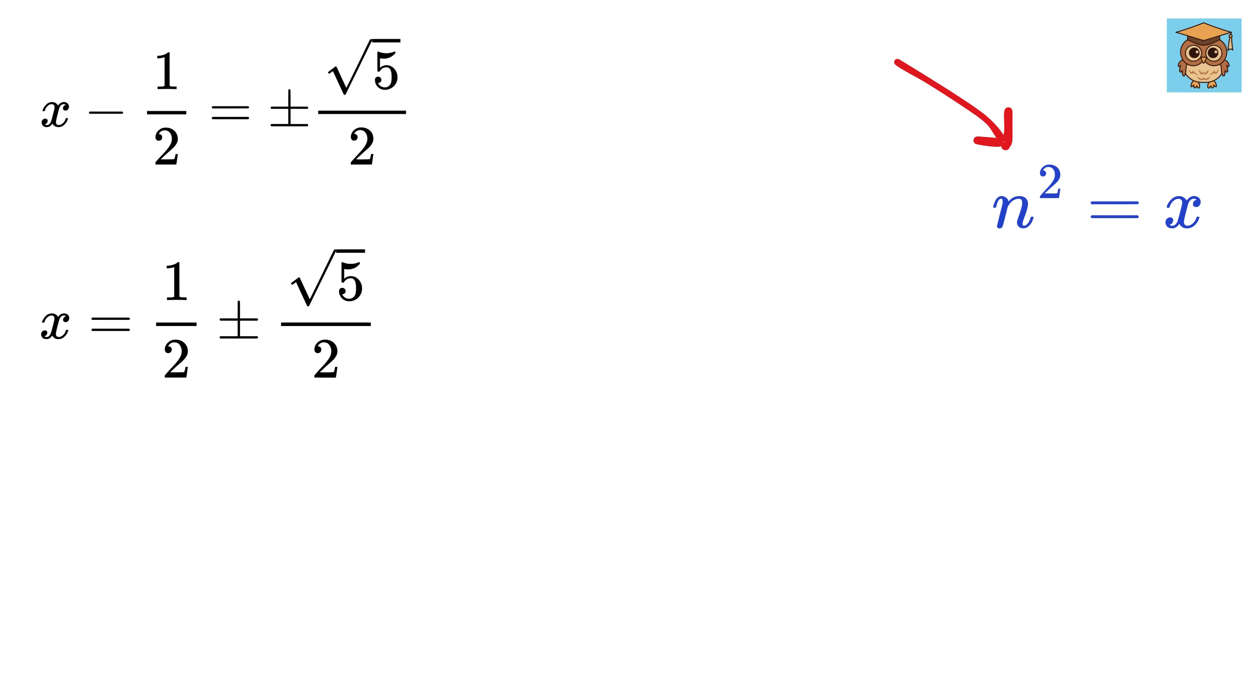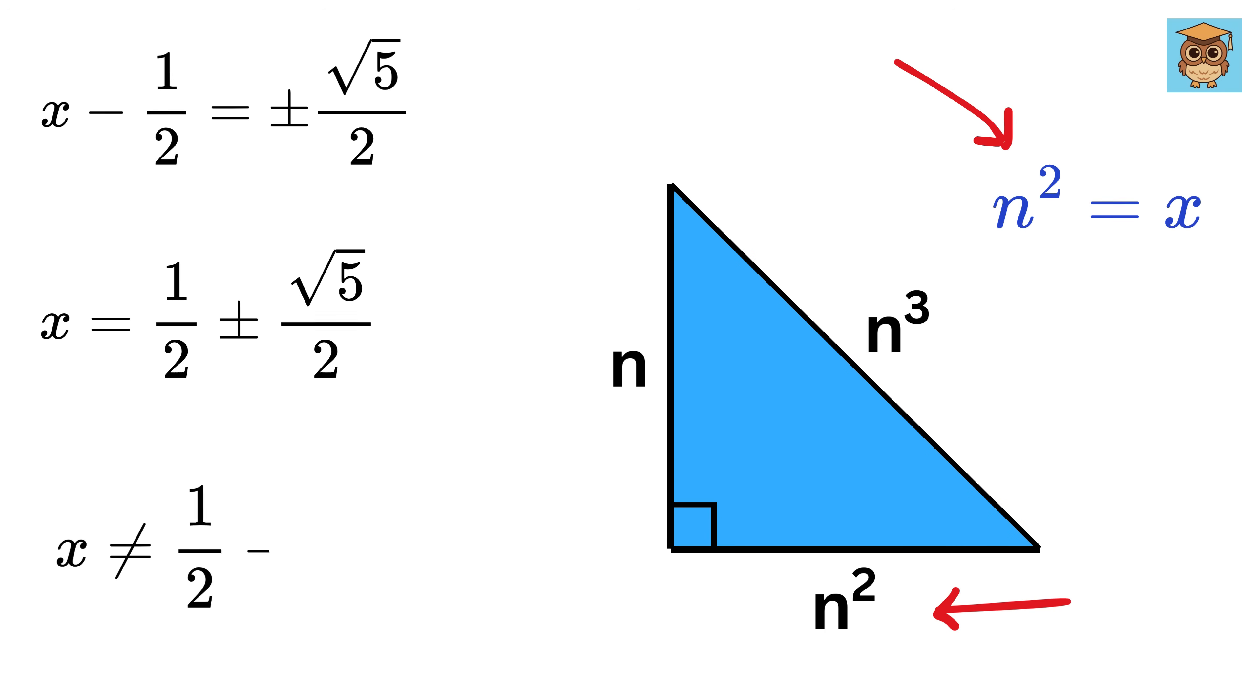Now x is same as n square, which is also a side of this triangle, so it cannot be negative. Hence x equals half minus root 5 by 2 is discarded, and we get x equals half plus root 5 by 2.